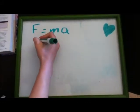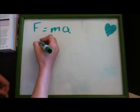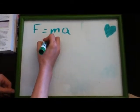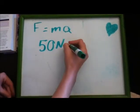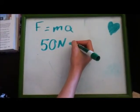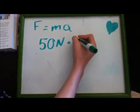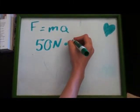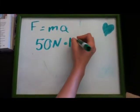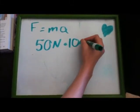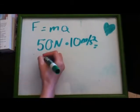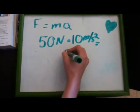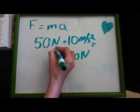Now if bad guy number 1 had a mass of 50 newtons and he was accelerating at a speed of 10 meters per second squared, then his force would equal 500 newtons.